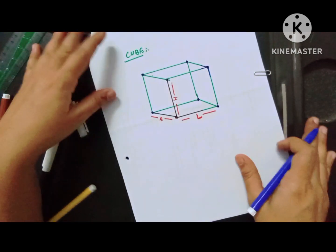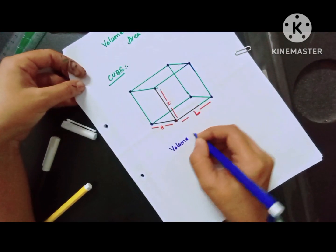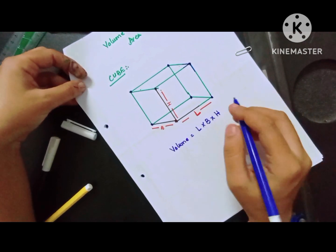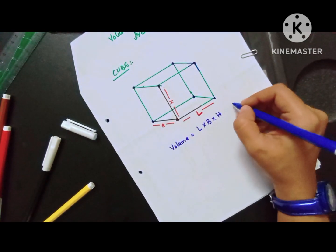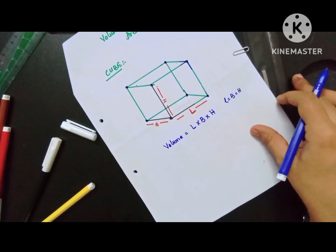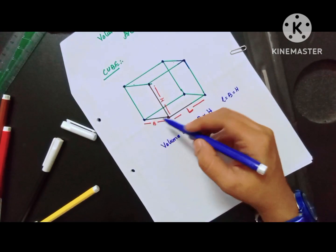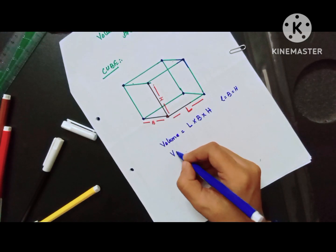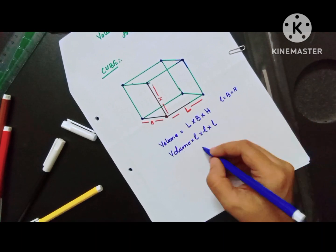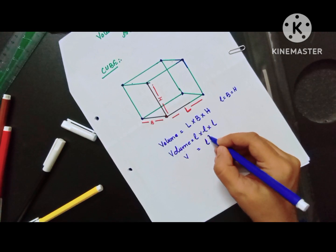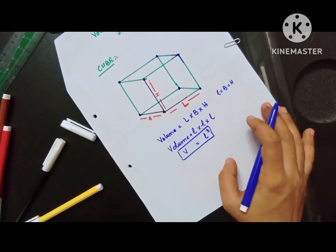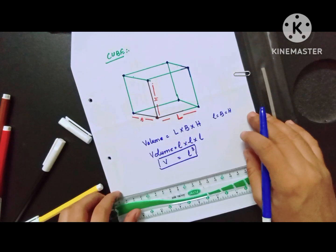So we have volume, and the formula for volume is length multiplied by breadth multiplied by height. In a cube, length, breadth, and height are all similar — for example if length is 5, breadth is also 5 and height is also 5. So volume of cube is equal to L × L × L, which is L³. This is the general formula.